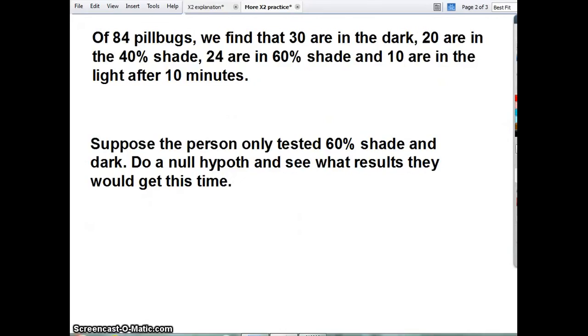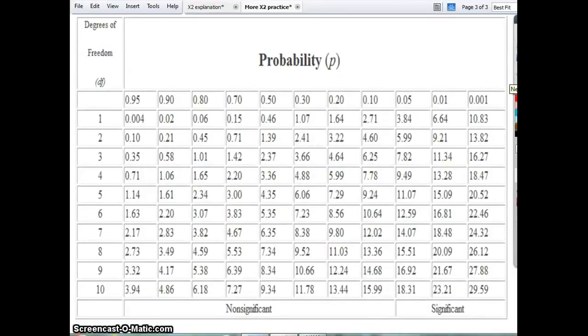Just like before, we're going to take our chi-square, we're going to go to the chart. 10.1, we're going to look at row 3. There were four options of where they could be. Number of options minus 1 gives us 3. And 10.1 falls over here between the 5 and 1 percent. Here's our cutoff, 5 percent.